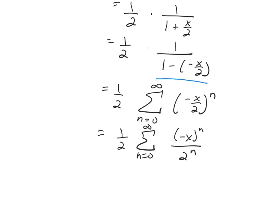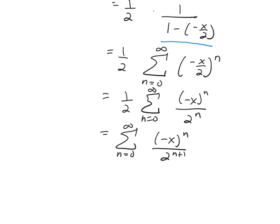You have the same base. Anytime you have the same base, you can combine. So when I combine them, I'm going to get negative x to the n over 2 to the n plus 1. And this is your power series representation for your function.